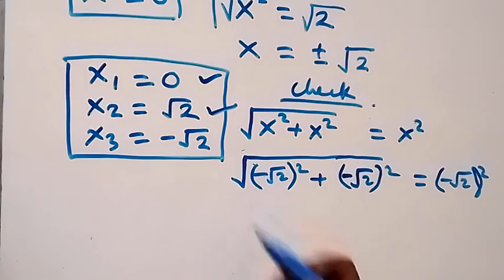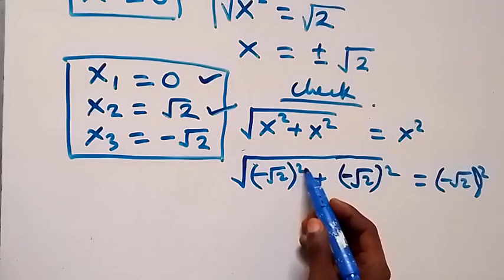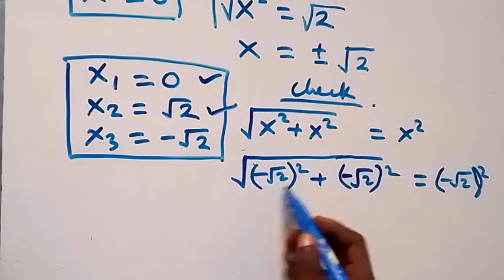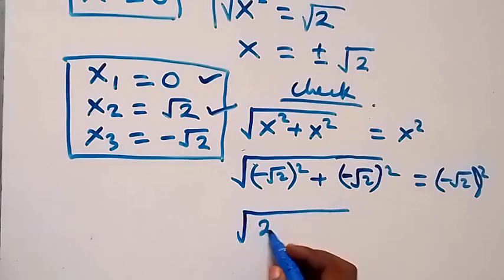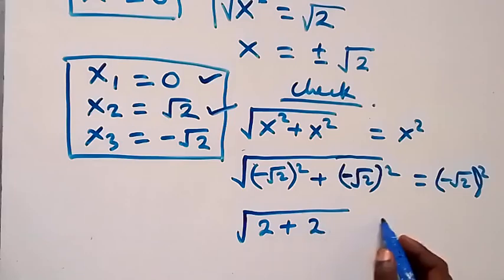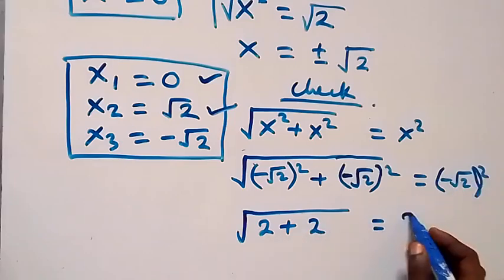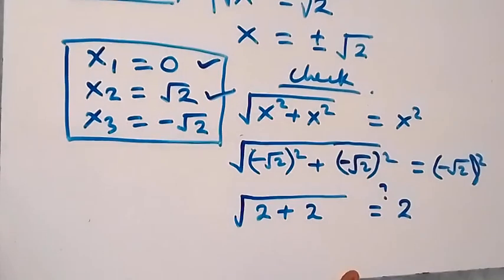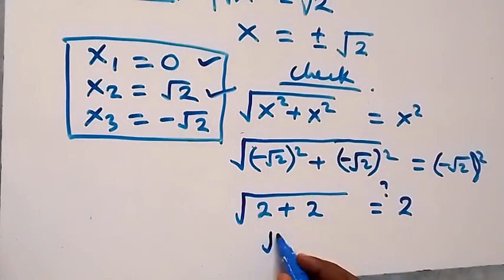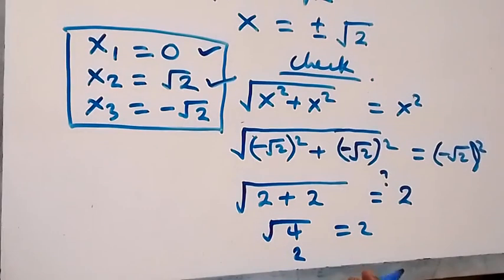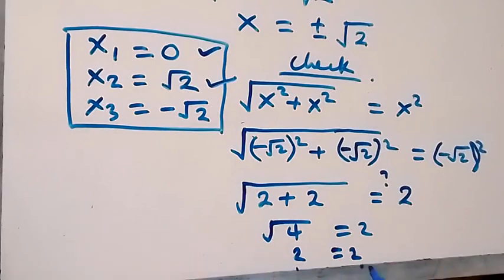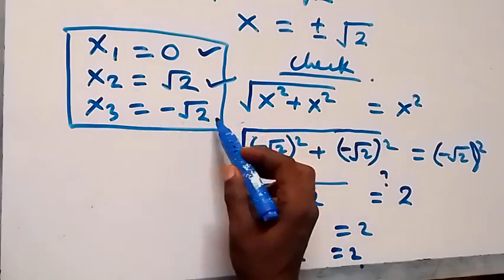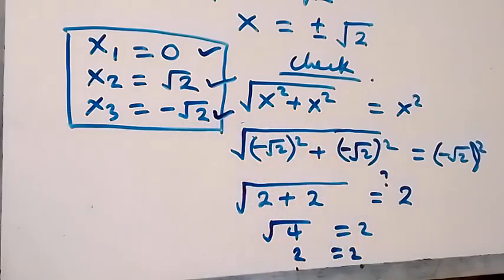Squaring -√2 gives plus 2, since a negative squared becomes positive. So we get √(2 + 2) = 2, which is √4 = 2. This equals 2 on both sides. Left hand side equals right hand side, confirming x = -√2 also satisfies the given problem.